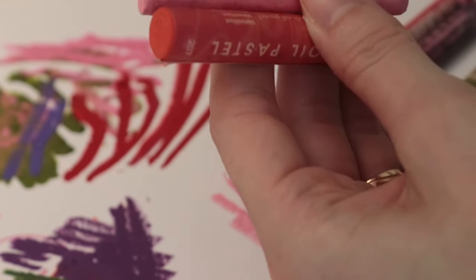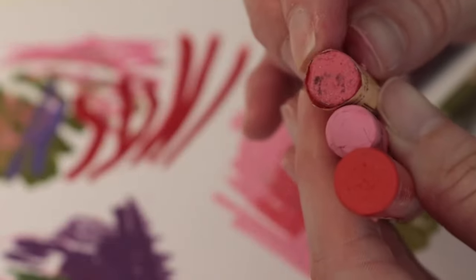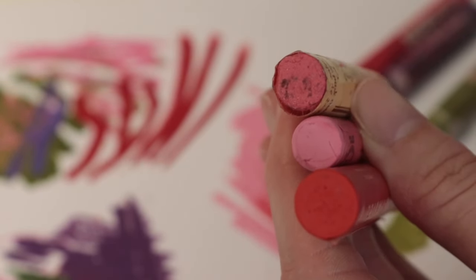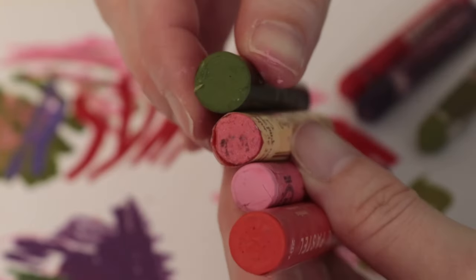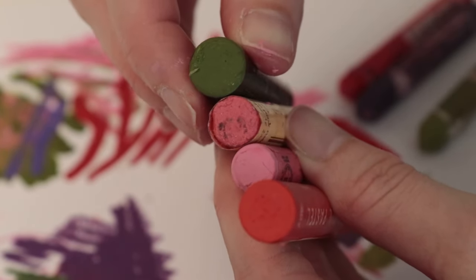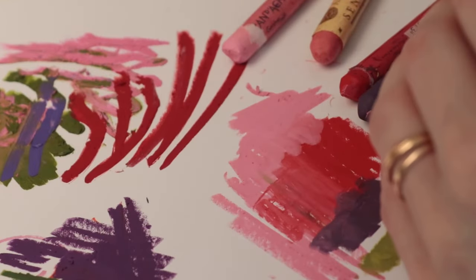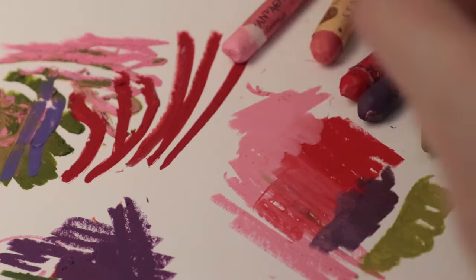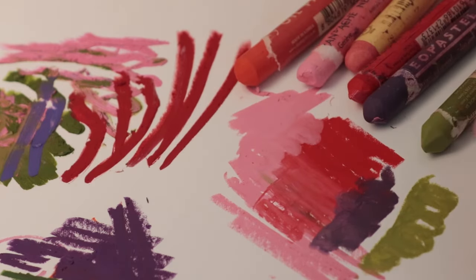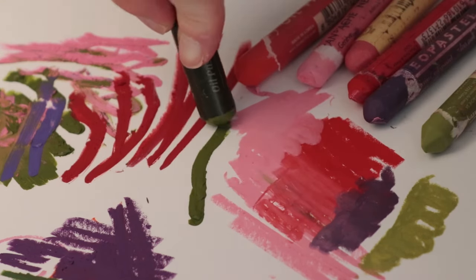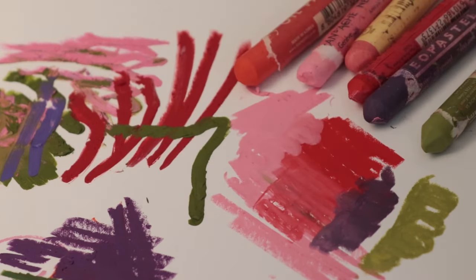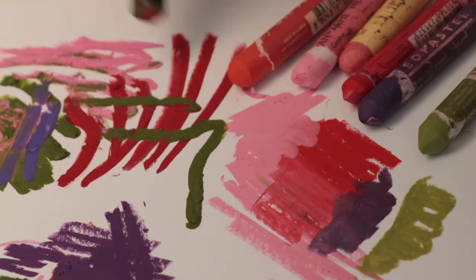And Sennelier, they are a bit wider than Neopastels. But you get a lot more on the Mungyo ones. And the Paul Rubens are also chunky. Very chunky. Which is nice. You get a lot more product. And I think for the Paul Rubens, you kind of need the bigger size. Because otherwise they would break really easily. Wow. Like it is mesmerizing how much paint they leave.